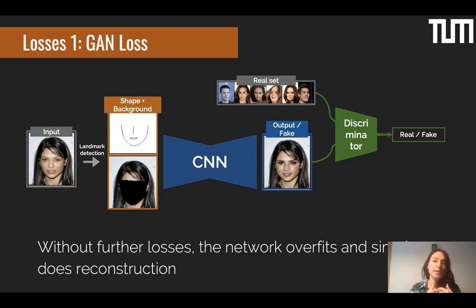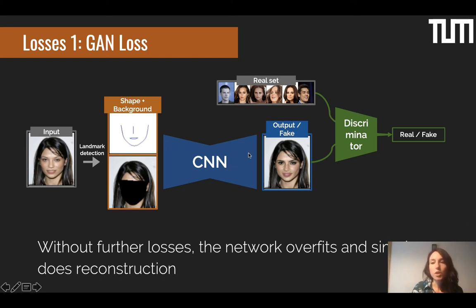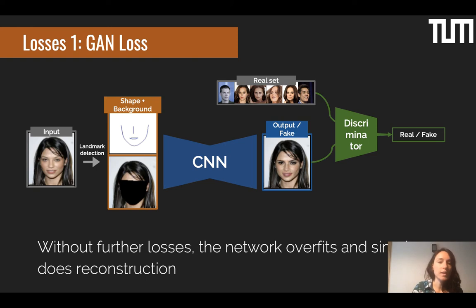Now let's discuss how we train the CNN to produce anonymized versions. The first loss is the GAN loss. We use generative adversarial networks, which are typically used to generate realistically looking images. Our CNN generates an output, and a discriminator judges whether that output looks like a real face. However, without further losses, the network will overfit and simply do reconstruction — returning a very similar image to the input. So with the GAN loss alone we generate a realistically looking image, but not an anonymized one.